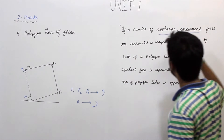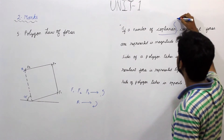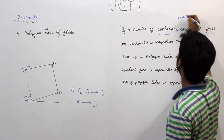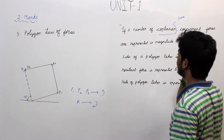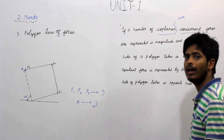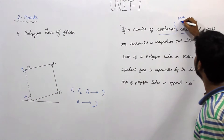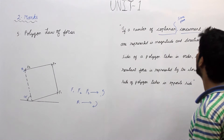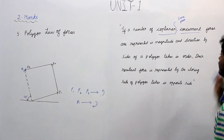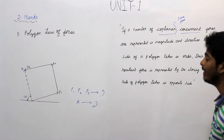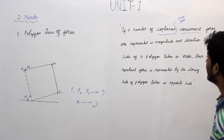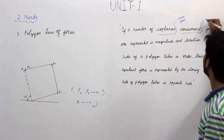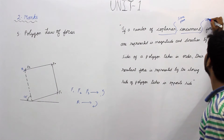If the number of forces are acting in the same plane, it is called coplanar. Concurrent forces refers to forces which are having a common intersection point.